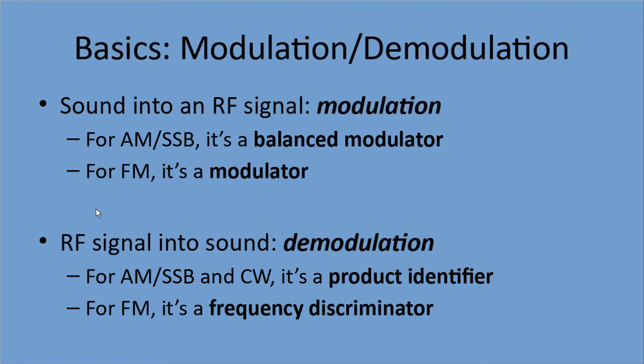Getting into the internals between input and output, we have modulation and demodulation. When we're modulating, we're turning sound into a radio signal — an RF signal. For AM and SSB, that type of modulation, the component that does it is called a balanced modulator. For FM, it's simply a modulator. On the other side, turning an RF signal back into sound is called demodulation. For AM, SSB, and CW, the demodulator is called a product detector. For FM, it's called a frequency discriminator. The trick to remember that: the F in FM stands for frequency — it's a frequency discriminator.